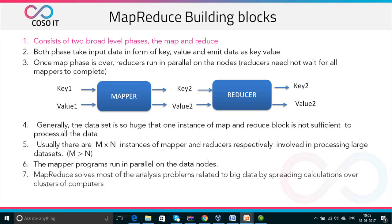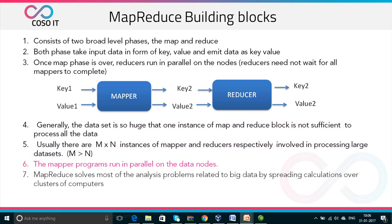MapReduce building blocks consist of basically two broad level phases: the Map phase and the Reduce phase. Both phases take input data in the form of key-value pairs and emit the output as key-value pairs. Once the Map phase is over, reducers start running in parallel on their nodes. Reducers need not wait for all the mappers to complete — they start running in parallel. Generally, the dataset is so huge that one instance of Map and Reduce block is not sufficient, so there are M to N instances of Mapper and Reducer involved. The Mapper programs run in parallel on the data nodes, making MapReduce a massive parallel processing setup.